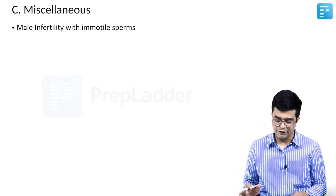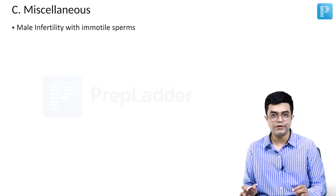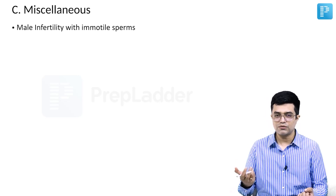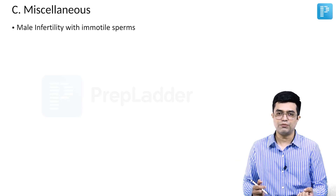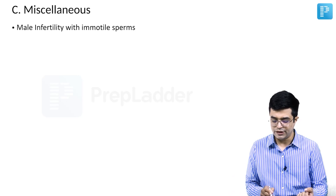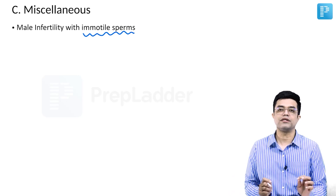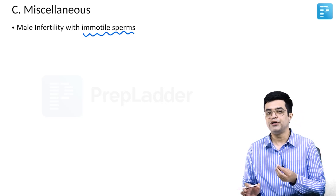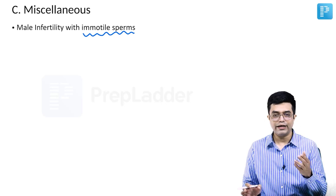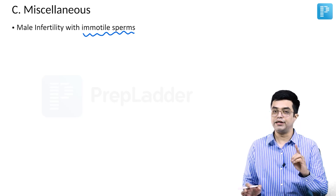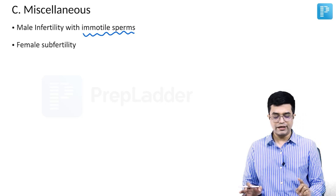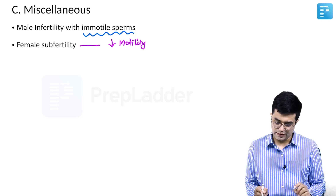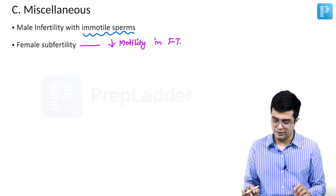The third category covers miscellaneous problems, including male infertility with immotile sperms. Because a similar ciliary structure is present in sperm flagella, ciliary dysfunction leads to immotility of sperms. In females, fertility is reduced because cilia in the fallopian tube are dysfunctional or absent. However, it is not complete infertility — the word subfertility is used for females, caused by decreased motility in the fallopian tube.